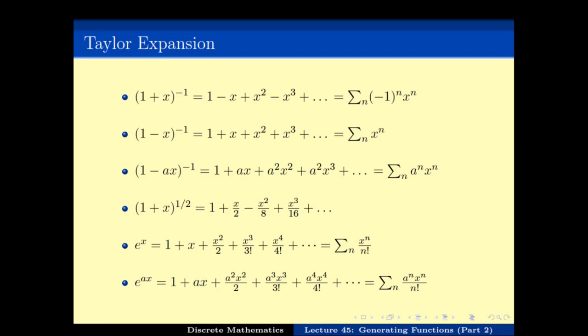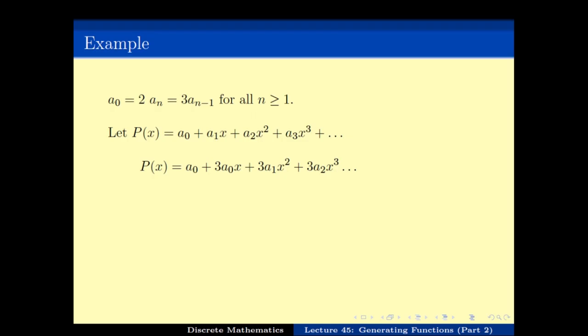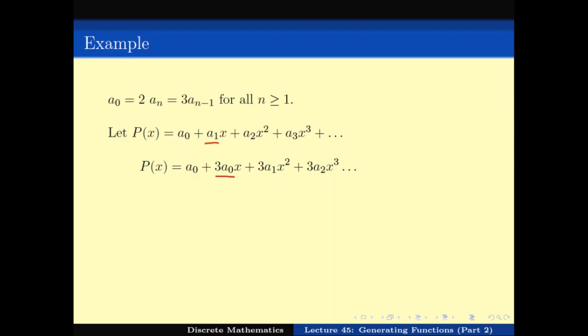Let us see how to use this approach with a simple recurrence first, and then slowly handle more difficult ones. The simple recurrence is: a₀ equals 2, and for n greater than or equal to 1, aₙ equals 3 times aₙ₋₁. If we write the polynomial P(x) as a₀ plus a₁x plus a₂x² plus a₃x³ and so on, then since aₙ equals 3aₙ₋₁ for all n ≥ 1, we can write a₁ as 3a₀, a₂ as 3a₁, a₃ as 3a₂, and so on.